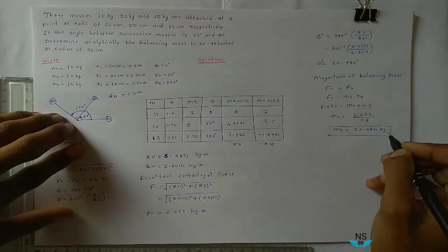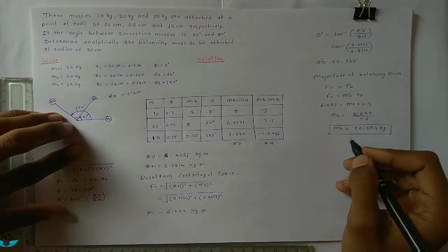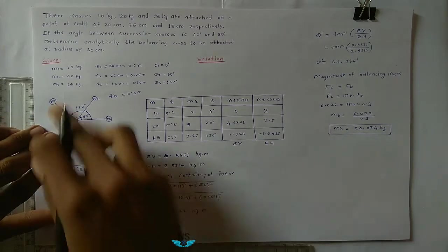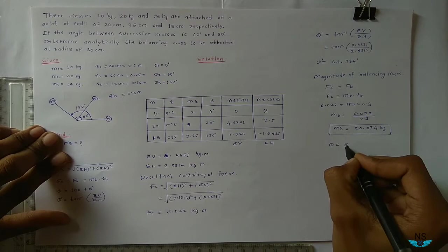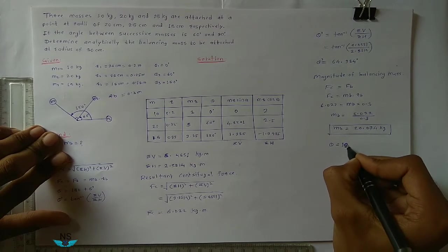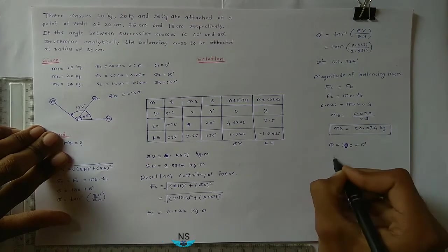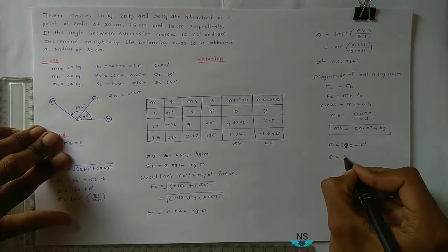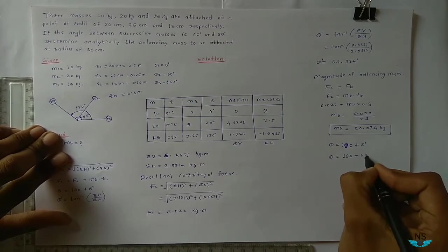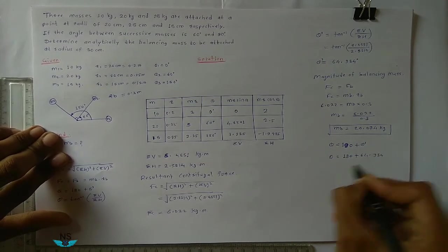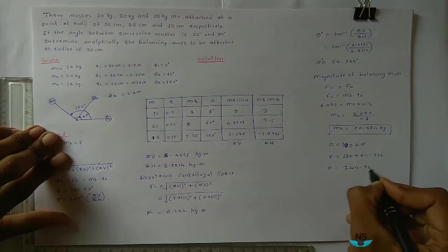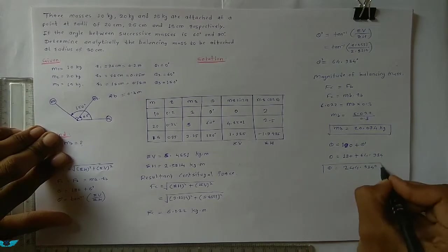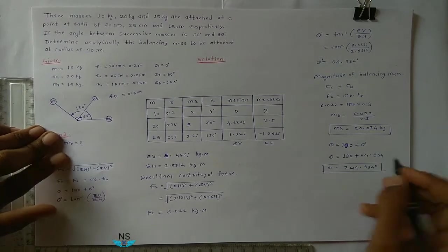If you have to find position of this balancing mass in this diagram, find out theta is equal to 180 plus theta dash. Theta is equal to 180 plus 64.934. Theta becomes 244.934 degrees from the positive x-axis.